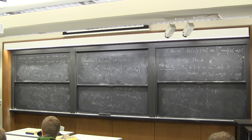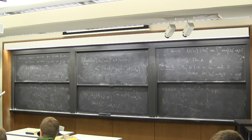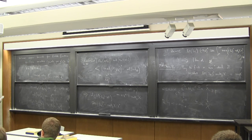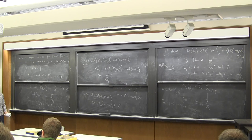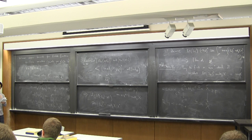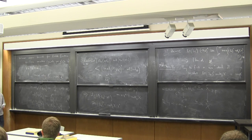Further Q&A: the volume bound in Theorem A still applies to non-K-semistable Q-Fano varieties, but gives a larger constant determined by how far the variety is from having a Kähler-Einstein metric — there is a geometric quantity encoding this. So volume bounds for arbitrary Q-Fano varieties can be obtained from these methods.